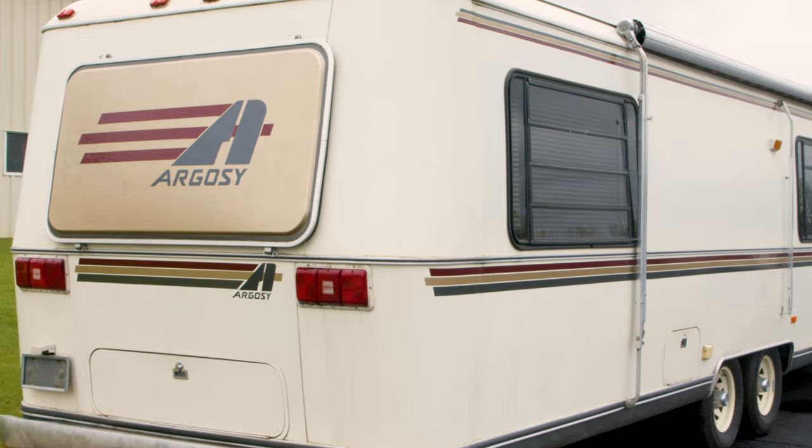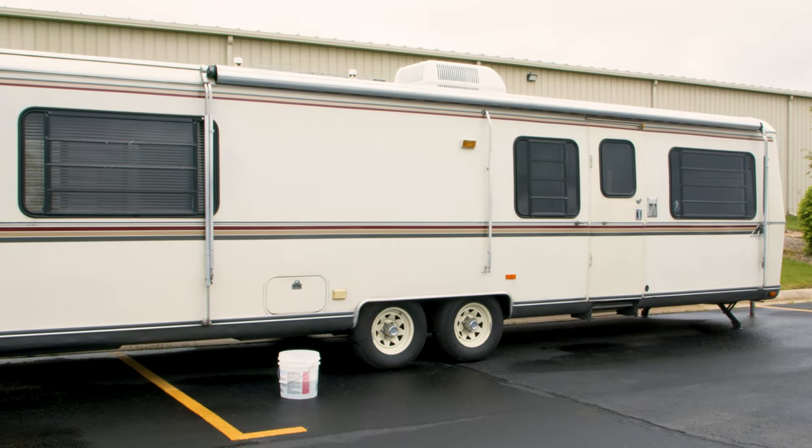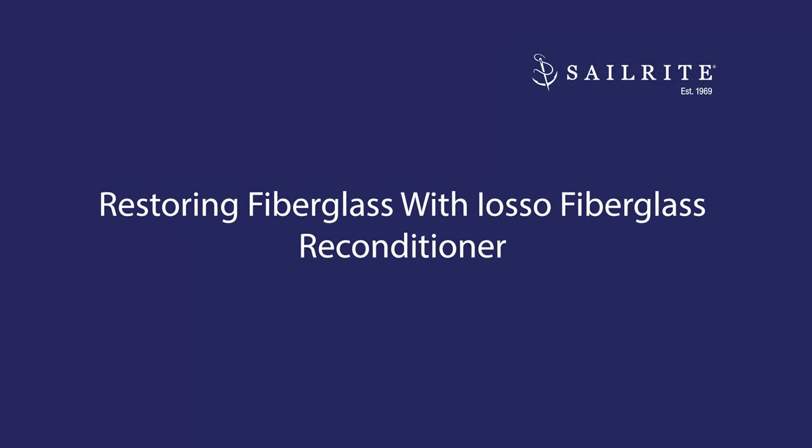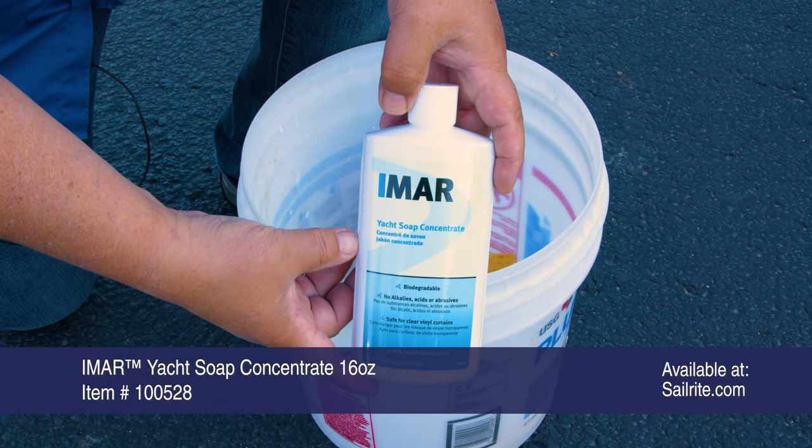In this video we're working with a 1987 Airstream Argosy. We're going to restore the exterior of this camper by using IOSO fiberglass reconditioner. We're going to be using IMR Yacht Soap Concentrate to clean our fiberglass.